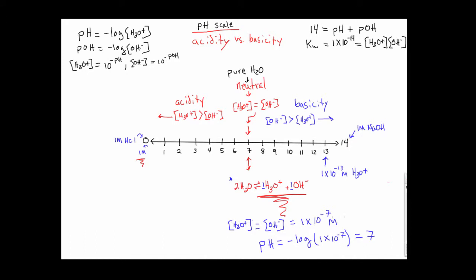This relationship is the basis of this equation where we have the ionization constant, which is 1 times 10 to the minus 14th.